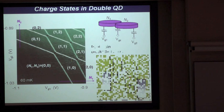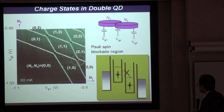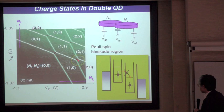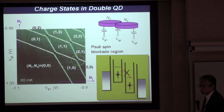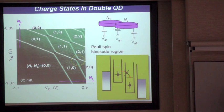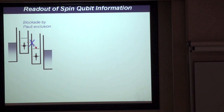We move to the region near the boundary between the one-one and two-zero states. Near these two-zero states, we can expect the effect of Pauli spin blockade. When the spin triplet is formed with parallel spins in two quantum dots, the transition of an electron from left to right is blocked due to Pauli exclusion, even when energetically allowed. Using this effect, we can extract the spin information.